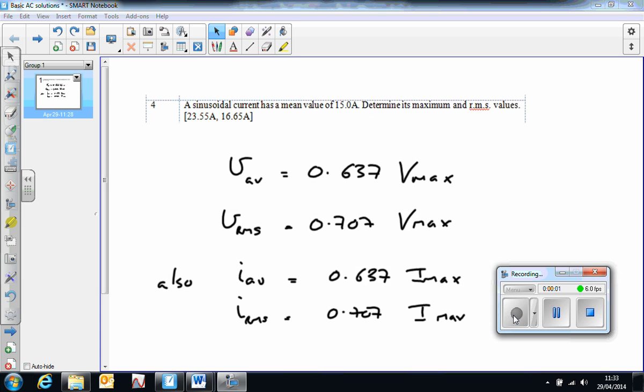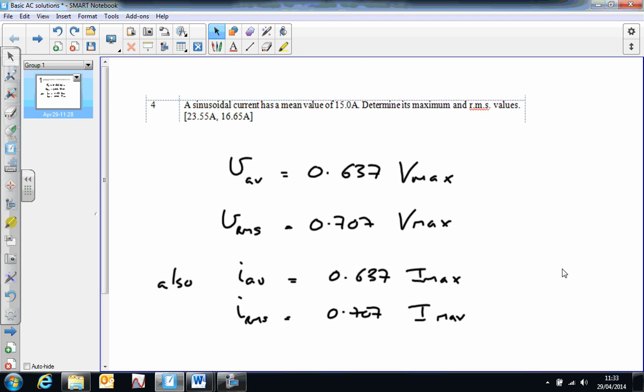So basic AC question number 2 just uses the fact that the average voltage or the average current is given by 0.637 times the maximum value, and that the RMS is 0.707 times the maximum value.